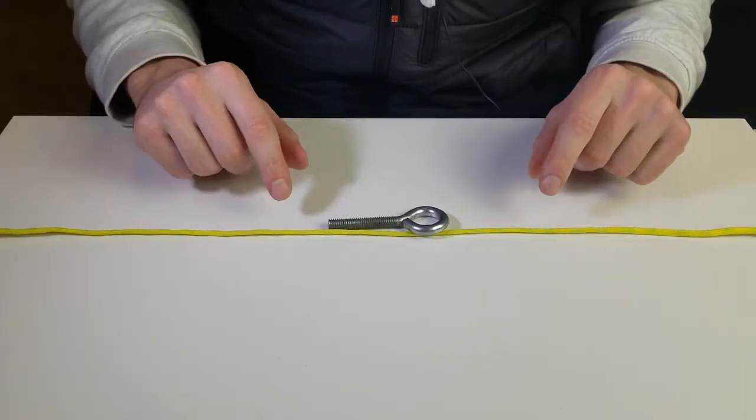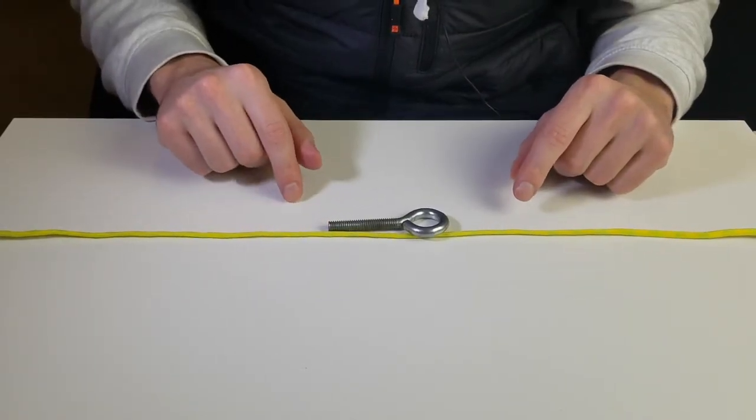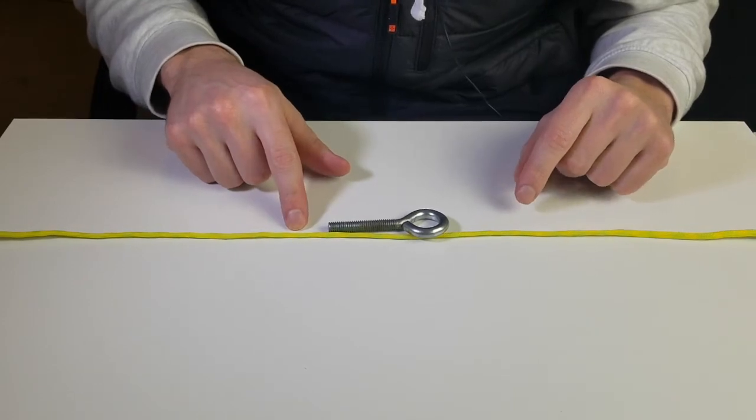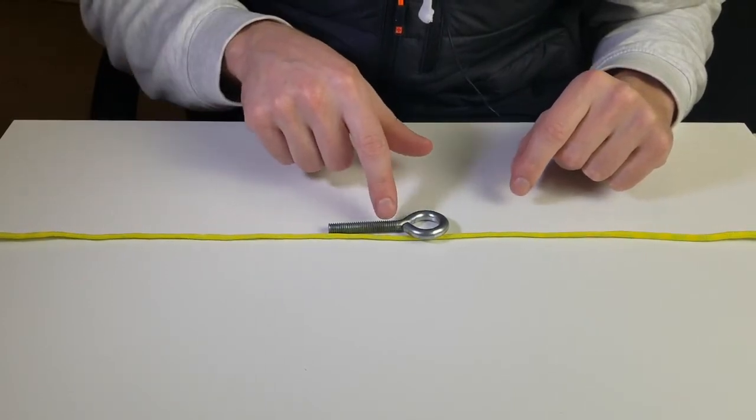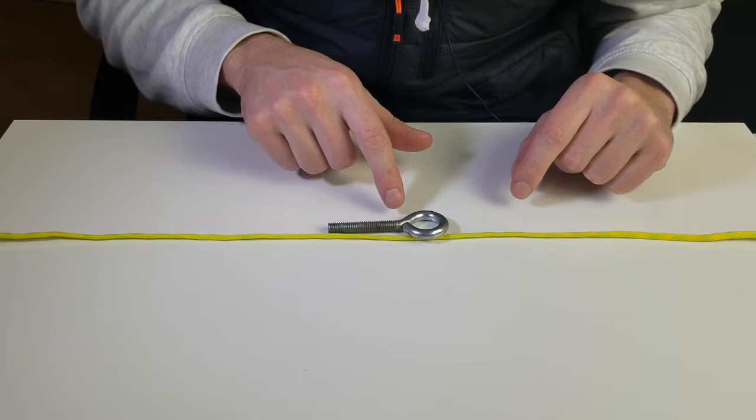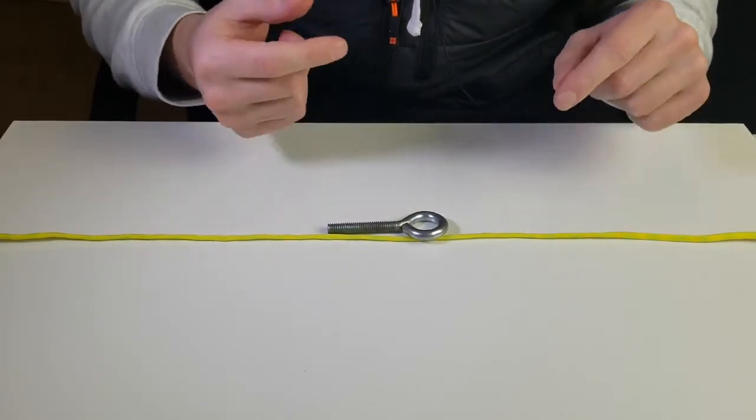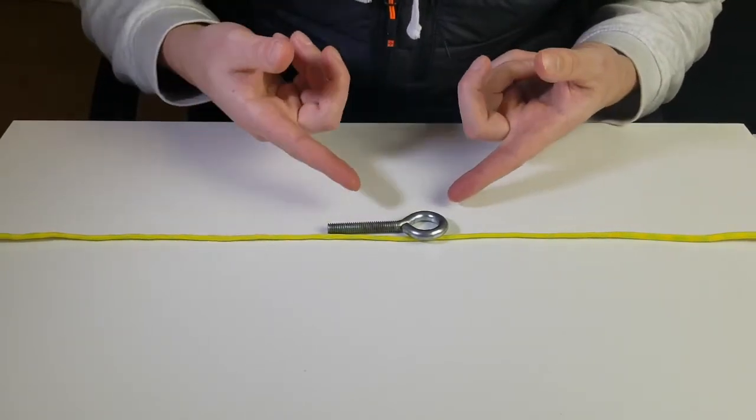I'm going to be using some thicker line here just because it's going to give you a better visual of what's going on, and I'm just going to use something like this to tie onto. You could attach this knot to a hook, swivel, or pretty much anything you want.